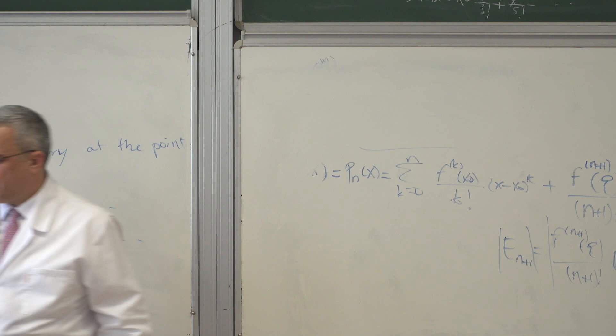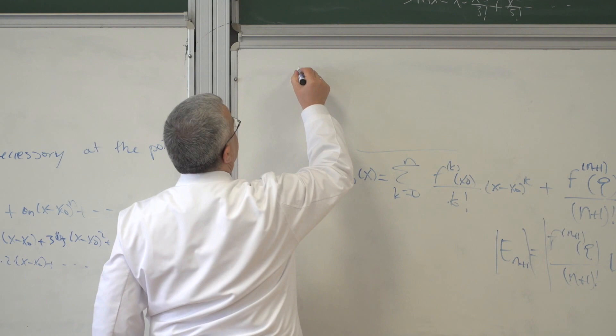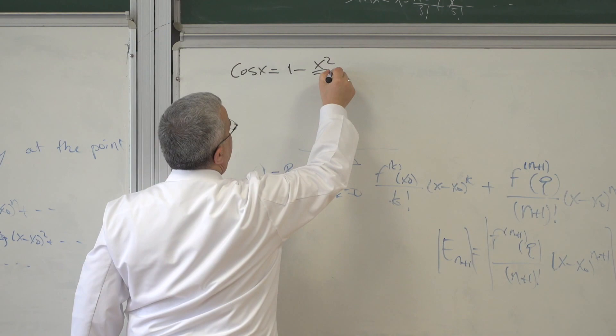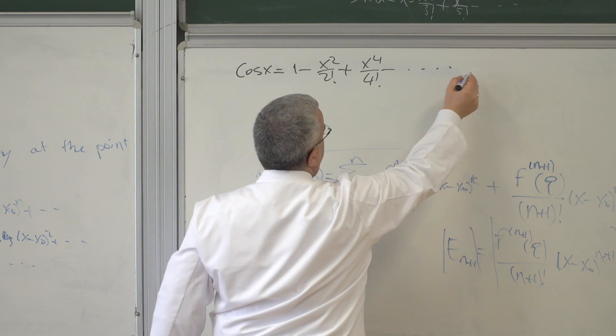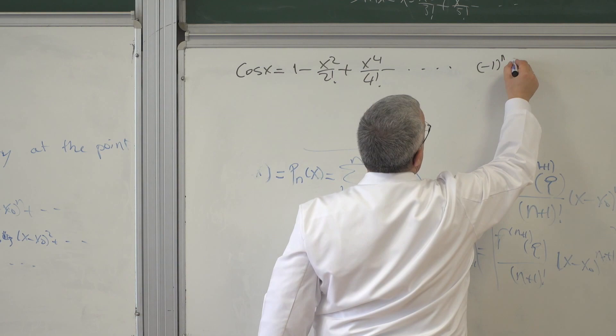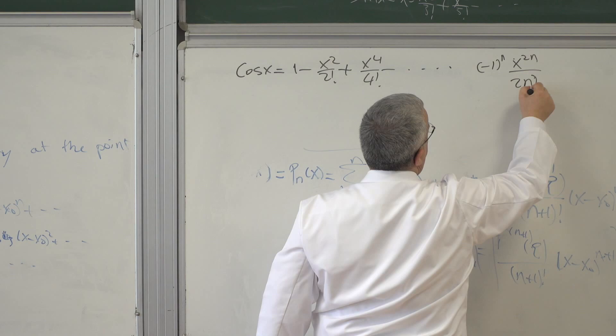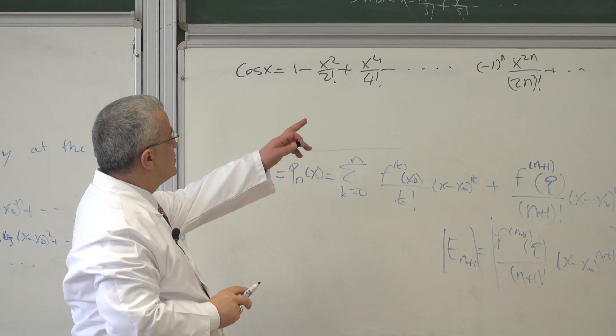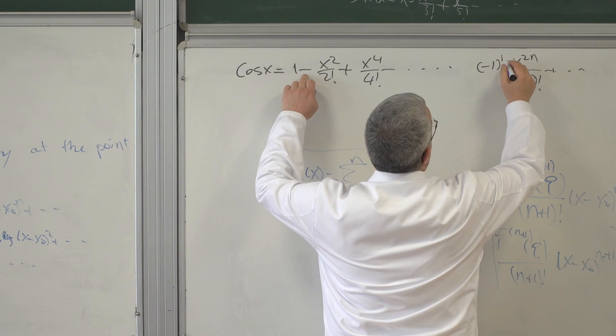For cos x, you do the same thing, and what you have is: 1 − x²/2! + x⁴/4! − …, with general term (−1)ⁿ · x^(2n) / (2n)!.